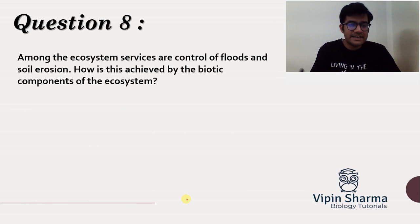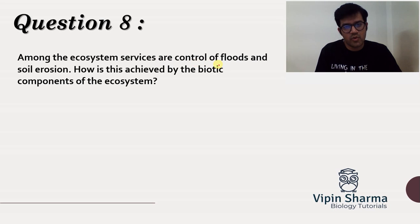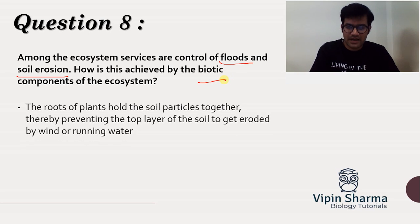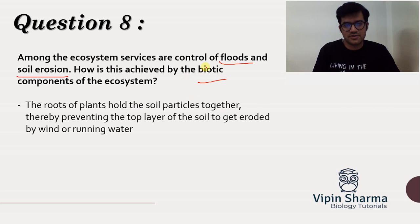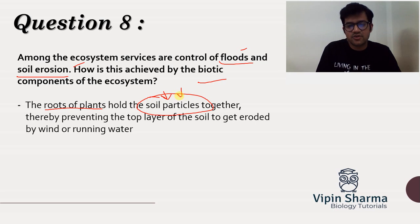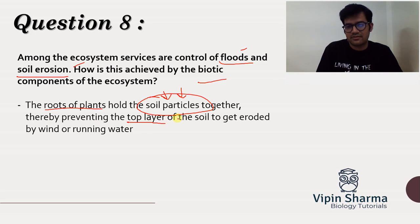Question number eight asks: among the ecosystem services, how do biotic components control floods and soil erosion? The biotic components are mainly plants and animals, but when it comes to soil erosion and floods, it is mainly plants. The roots of these plants hold the soil particles tightly, and if they are holding the soil particles tightly, they will not allow the top layer of soil to erode.